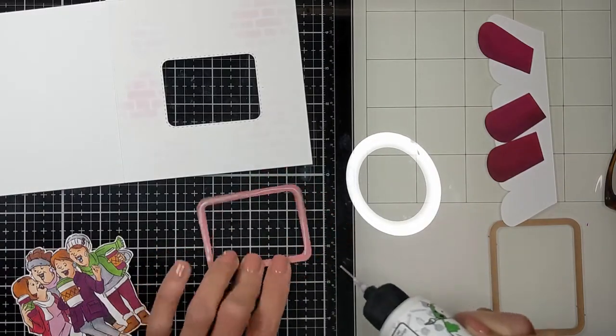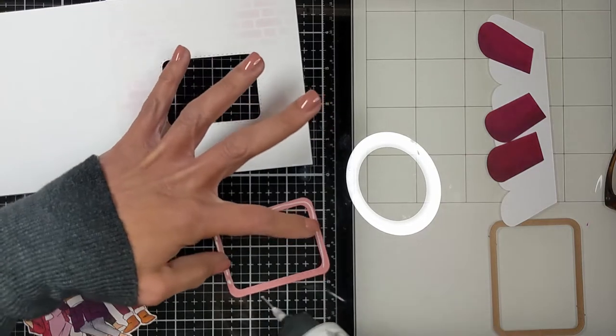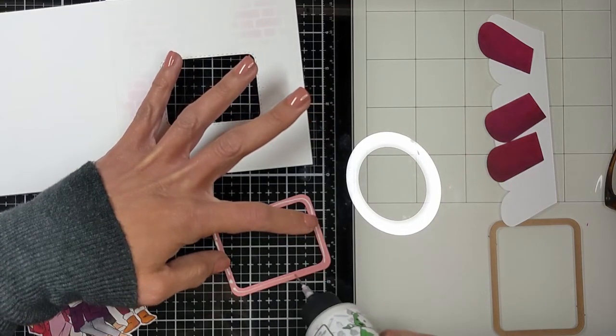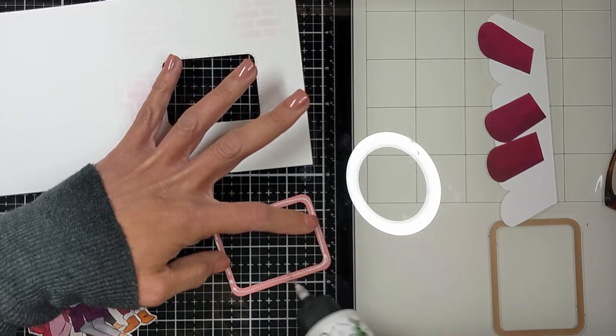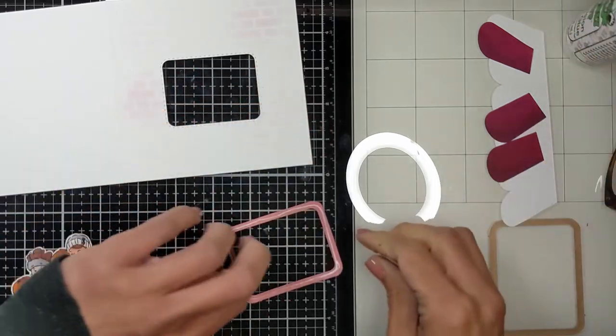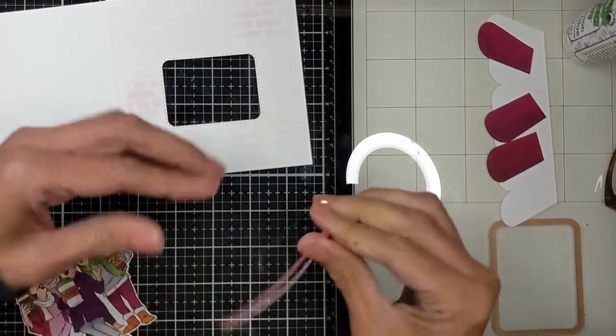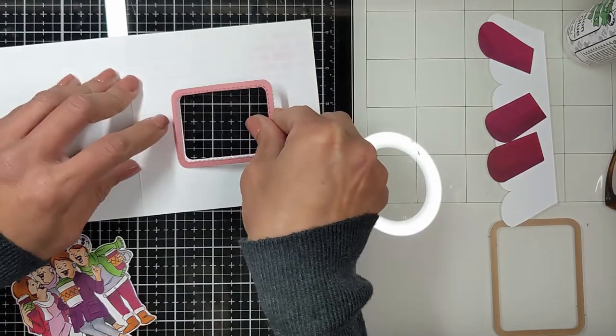So to frame it, I cut again with the double stitch die on a piece of scrap. Then I used a corner punch so I could create the same corners that are on the window.